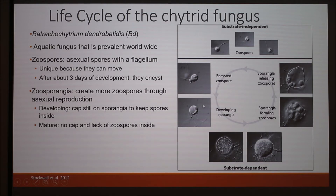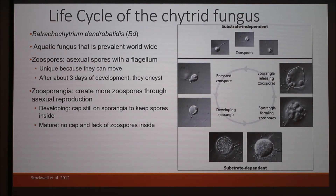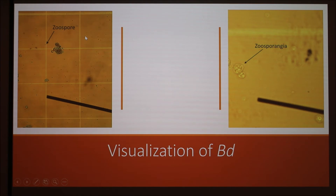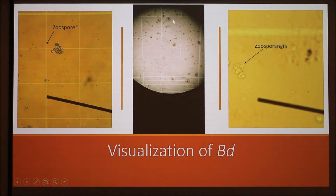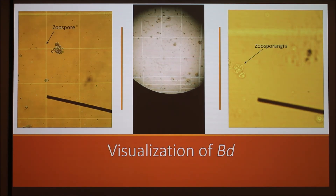The sporangia form more zoospores — you can see in this picture a developing sporangia, and these tiny dots are more zoospores inside it. Once the sporangia become mature, the cap is lost and the zoospores are released into the environment to swim away and proliferate, creating more sporangia. That's how it grows. I took these microscope pictures and counted all these dots across about 1,200 pictures — it was awful. Here we see a zoospore as a tiny black dot, and here's a good example of a sporangia. In this GIF, all the moving dots are zoospores swimming through liquid under the microscope.